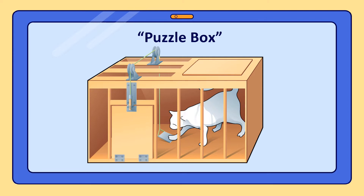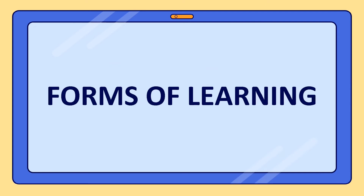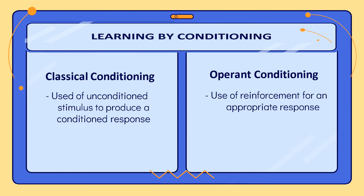When we talk about the forms of learning, we have six forms. The first two are learning by conditioning. Conditioning means getting used to or adjusted to a new situation or stimulus. It is a process of substituting the original stimulus with a new one and connecting the response with it. There are two types of conditioning theories: classical and operant conditioning.